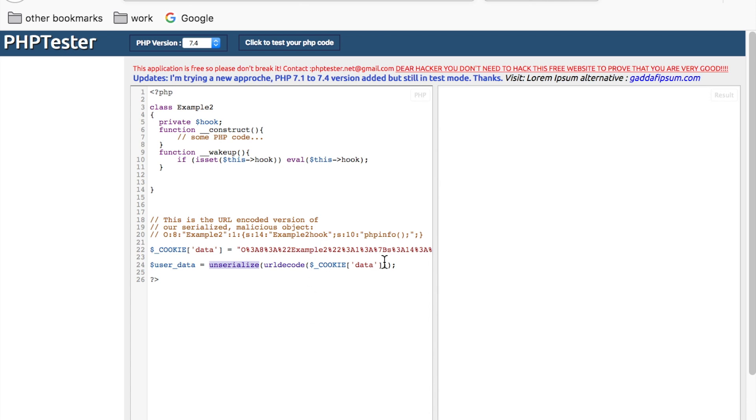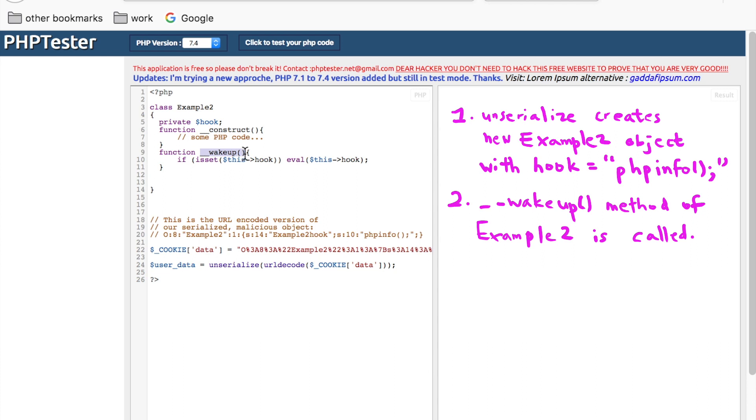And because the data cookie is a serialized example2 object, unserialize will instantiate a new example2 object. Unserialize will see that example2 class has wakeup implemented. So the wakeup function will be called. Wakeup looks for the hook property of the object. And if it is not null, it runs eval hook.